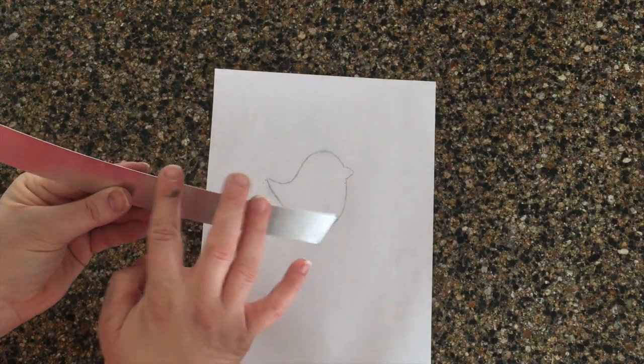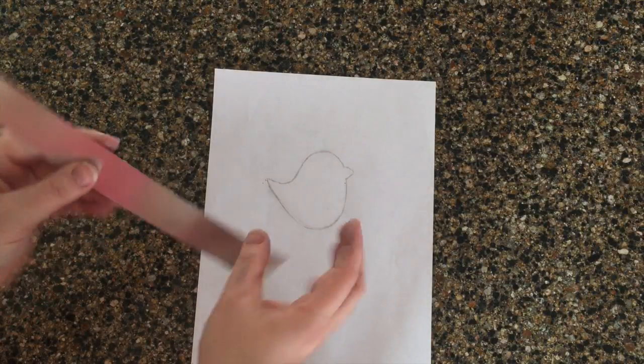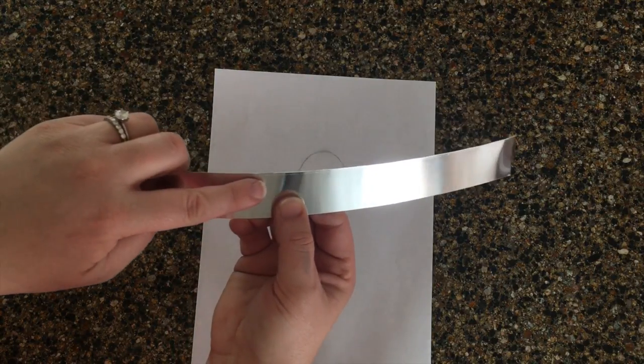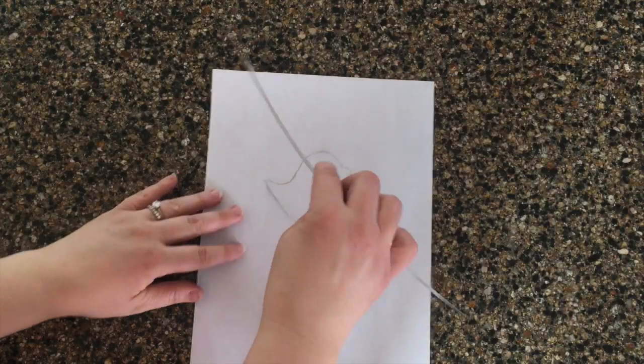Now it's time to mold the strip around the template. Find the edge that you cut and make sure it faces down towards the paper. It will be much sharper than the commercially cut edge and you don't want to cut yourself when you make cookies.